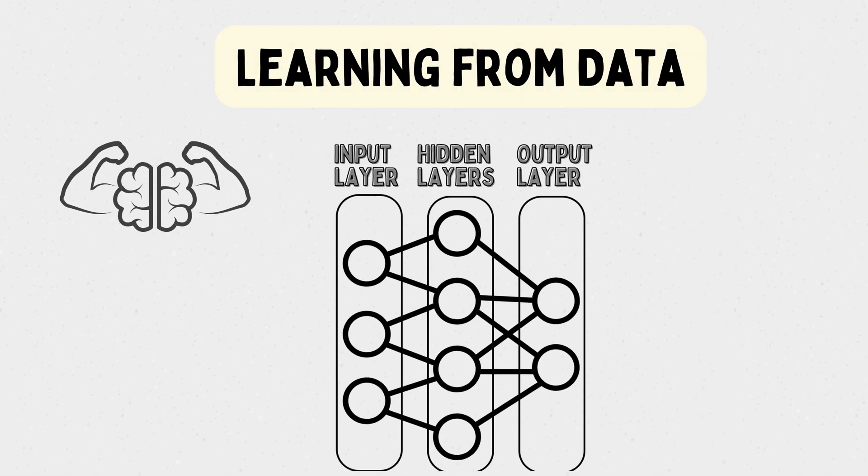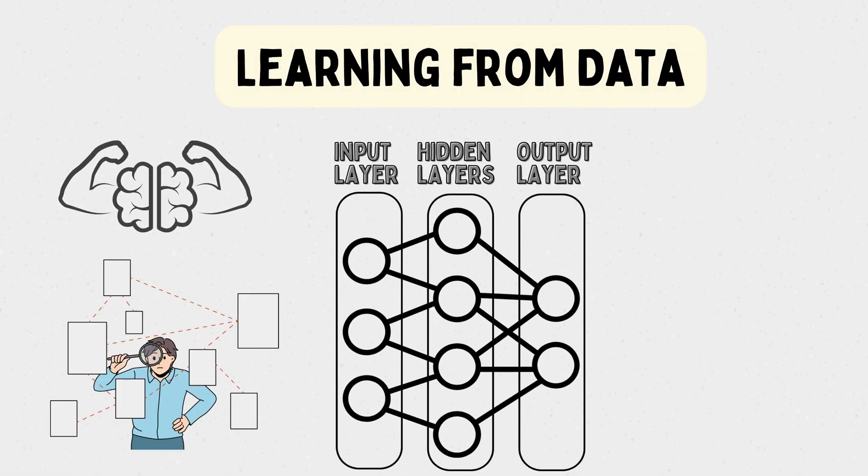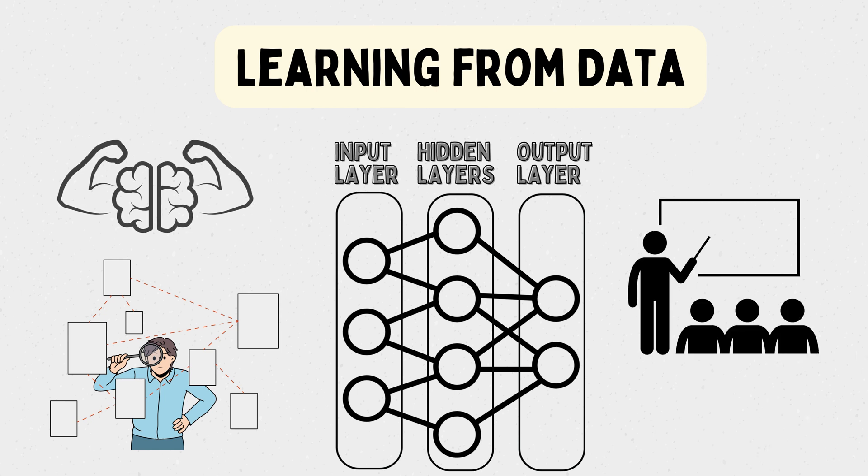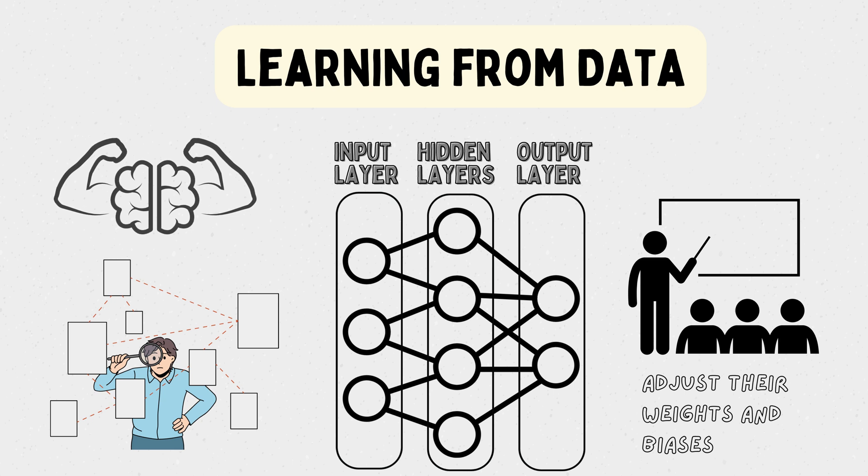The true power of neural networks lies in their ability to learn from data. During training, neural networks adjust their weights and biases to minimize the difference between their predictions and the actual target values. This process is called training, and it often involves optimization algorithms like gradient descent.